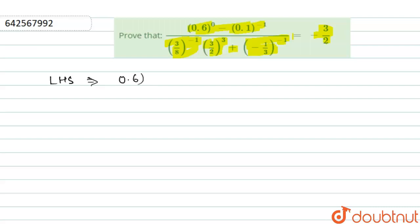Prove that 0.6 to the power 0 minus 0.1 to the power minus 1, upon 3 by 8 to the power minus 1 into 3 by 2, whole cube, plus minus 1 by 3 to the power minus 1 equals minus 3 by 2.